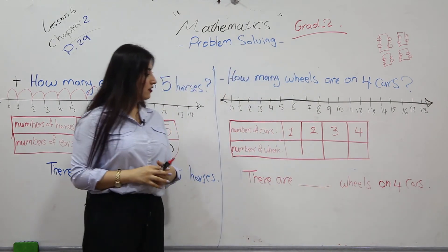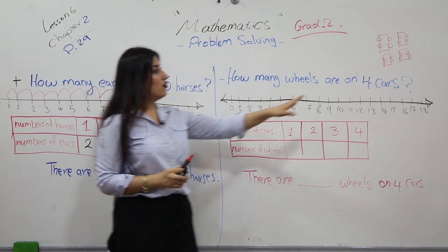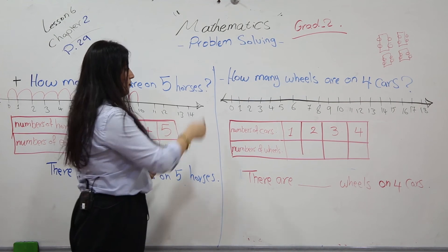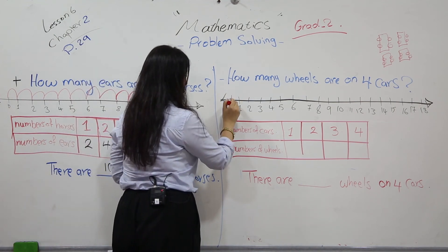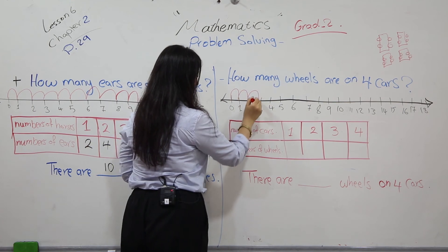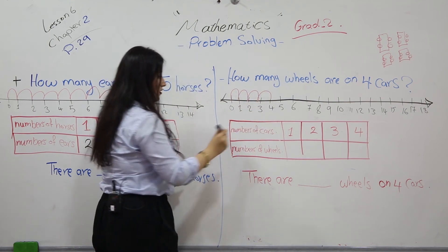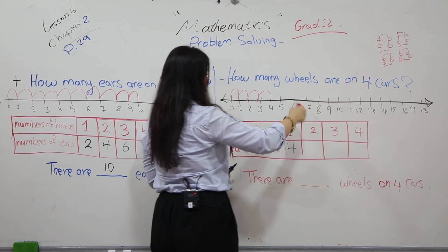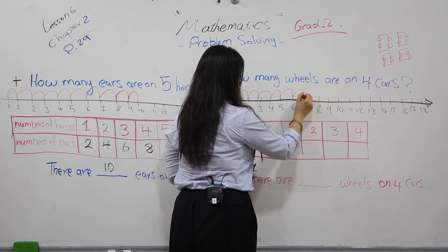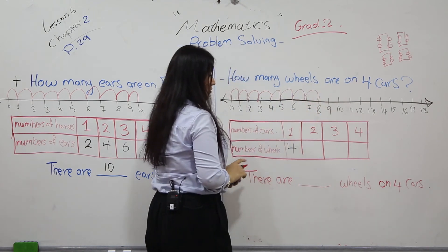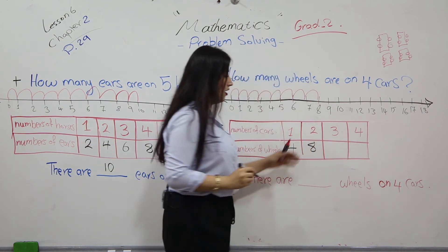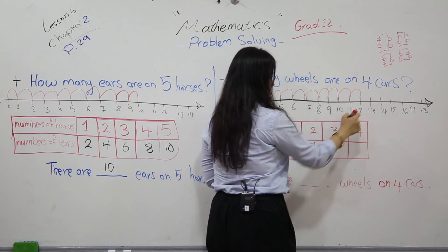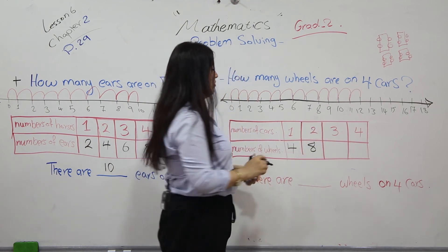If you have one car, we jump four times — one, two, three, four — we end on four. If you add one more car, we jump four more times — one, two, three, four — we stop on eight. If you have three cars, we jump again — one, two, three, four — it stops on twelve.